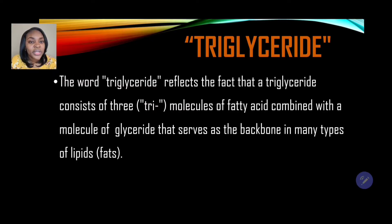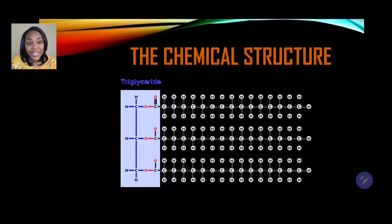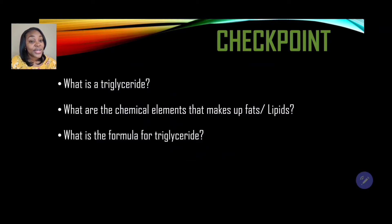The word 'triglyceride' reflects the fact that it consists of three — 'tri' meaning three — molecules of fatty acids combined with a molecule of glyceride, which serves as the backbone in many types of lipids. Another name for lipids is fat. So what you're seeing here is three fatty acids plus a glyceride, giving us triglycerides, made up of hydrogen, carbon, and oxygen.